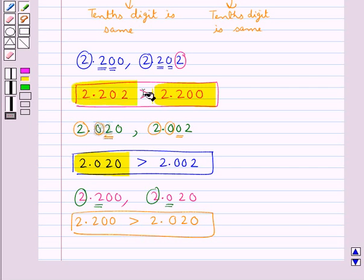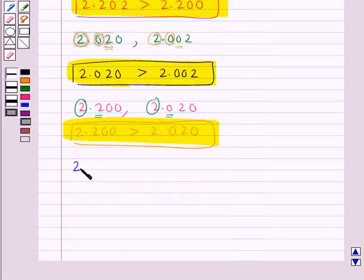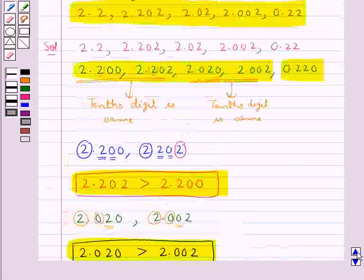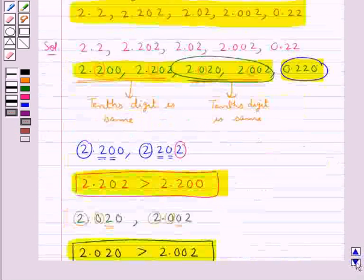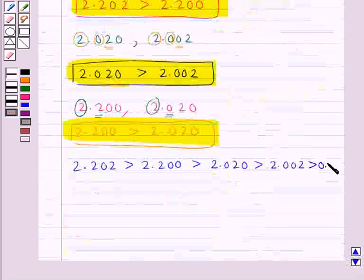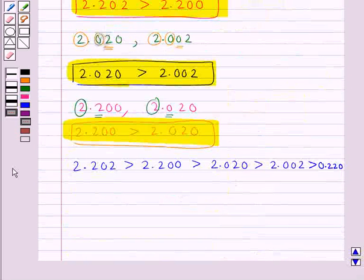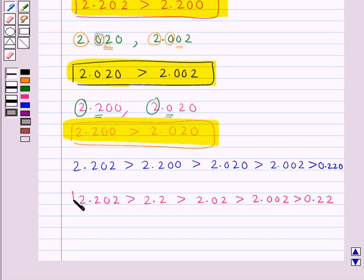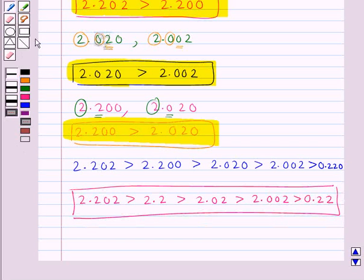From these three results we get: 2.202 is greater than 2.200, which is greater than 2.020, which is greater than 2.002. And we know that 0.220 is the smallest of all. So the descending order of the given decimal numbers is: 2.202 > 2.200 > 2.020 > 2.002 > 0.22. This is the required descending order and our final answer. This completes the session — hope you have understood the solution.